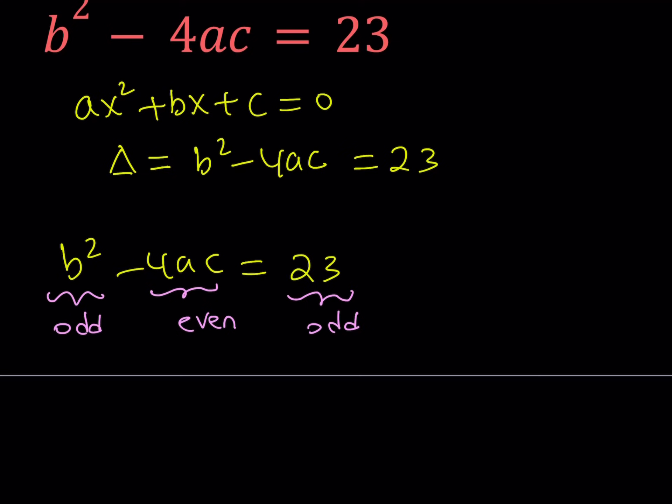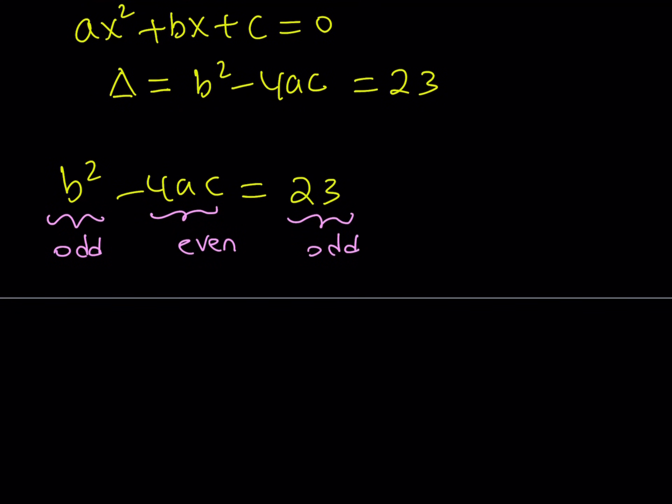Otherwise, if you subtract an even number from an even number, the difference is also even. And you can easily prove this. That's very easy to prove. Now, what does that mean for b squared to be odd? If b squared is odd, this basically implies that b is odd. Simple.